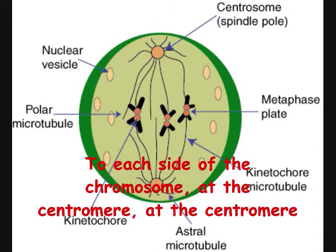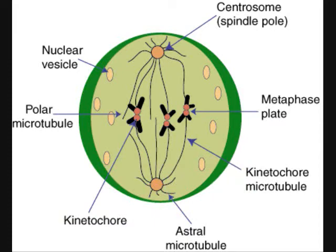Chromosomes line up in the middle of the cell. Then fibers attach to each side of the chromosome at the centromere.